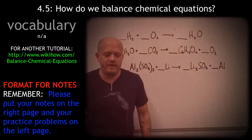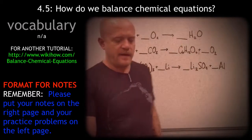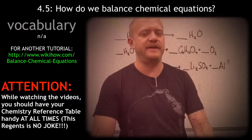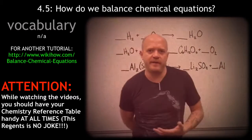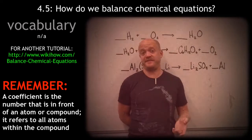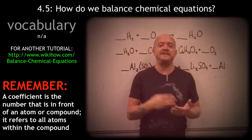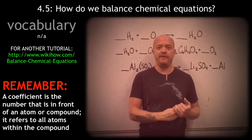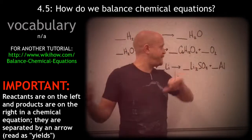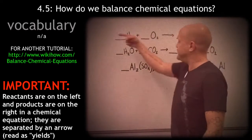Today we're going to talk about balancing equations. Before you do that, review your notes from section 4.4 because we talked about coefficients. When you put a coefficient in front of a compound, it's going to change the quantity of all the atoms within that compound. It doesn't change the formula mass — it's just used to balance the products and the reactants. The left side of the arrow is the reactants and the right side is the products.